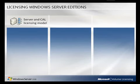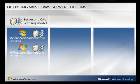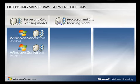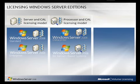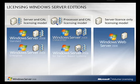Windows Server 2008 is licensed with three models. Windows Server 2008 Standard and Enterprise editions use a Server Client Access, or CAL, model. Windows Server 2008 Data Center and Itanium use a processor and CAL model. Windows Server 2008 Web Server uses a per-server model.